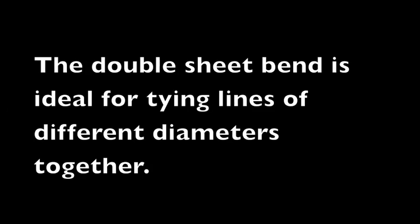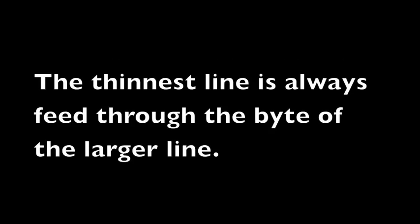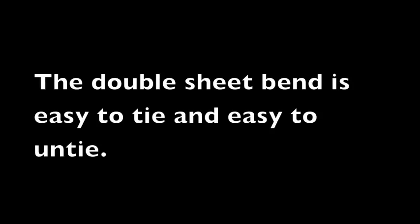Points to remember. The double sheet bend is ideal for tying lines of different diameters together. The thinnest line, in this case the red line, is always fed through the bight of the larger line. The double sheet bend is easy to tie and easy to untie, and is more secure than the sheet bend.